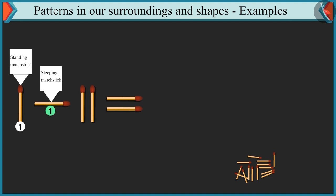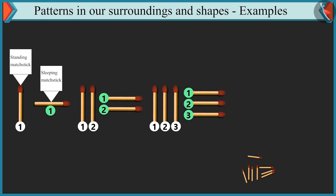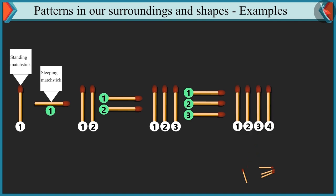First one-one matchstick and then two-two matchsticks. So how many matchsticks do you have to put next in this pattern? Three-three matchsticks after two-two matchsticks. It means we will put three standing matchsticks and three sleeping matchsticks. We will move ahead by placing four-four matchsticks, which means four standing matchsticks and four sleeping matchsticks.